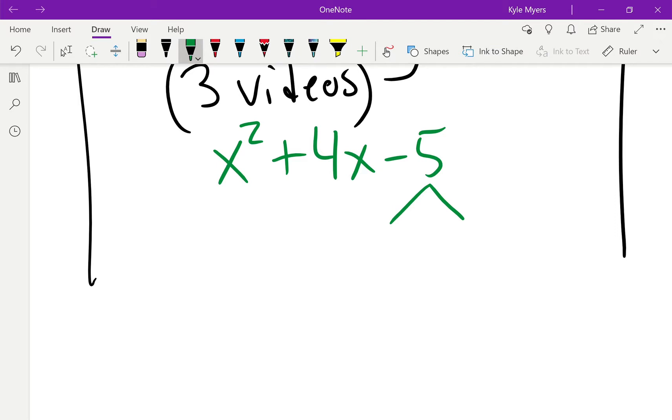Now, since 5 is a prime number, the only things that multiply to give you 5 are 5 and 1, or 1 and 5. Now, if I do 5 and 1, and they're both positive, then I'm not going to get negative 5 when I multiply. So one of them has to be negative.